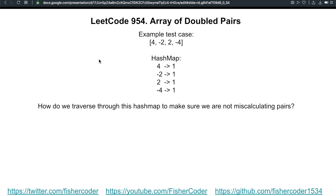Eight doesn't exist, but that doesn't necessarily mean this isn't a valid case. So the order in which we traverse the hashmap is key. Thanks to Alex Weiss, who brought up a very good algorithm — I'll put a link to the solution below. The idea is to sort by absolute values so we can always find the correct answer. This order is sorted by absolute values, so it could be minus two, two, or two, minus two — as long as the absolute values are sorted, we're good.